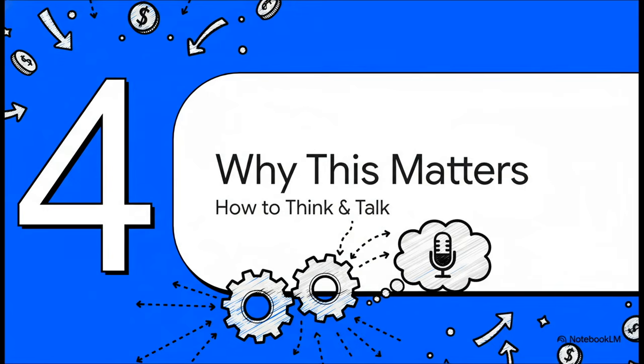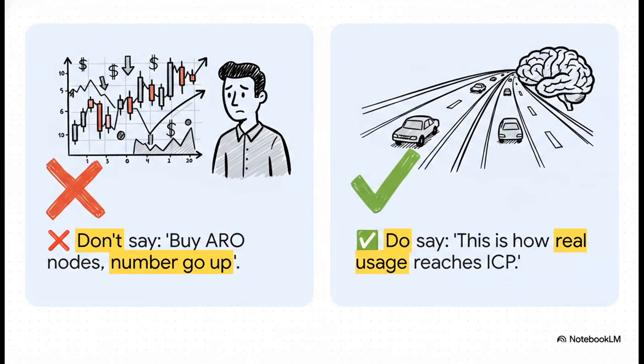So let's bring this all home. Our final section: Why this matters. This is all about how to really think and talk about this partnership, based on the mechanics we've just broken down. And the framing here is absolutely critical. The source material is really clear on this. It says, hey, don't go around saying things like, buy ARO nodes, number go up. Because that's just pure speculation. Instead, the correct way to frame it is, this is how real usage reaches ICP. The focus has to be on utility, on the actual work that's getting done.